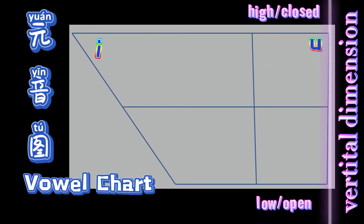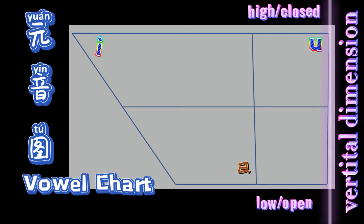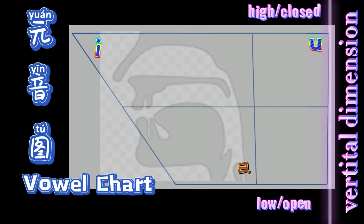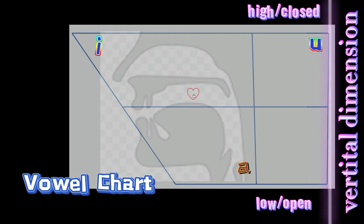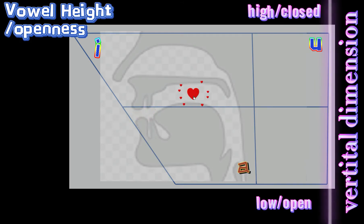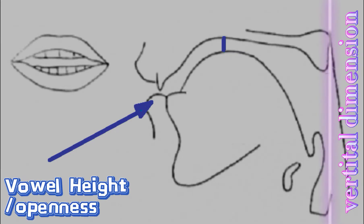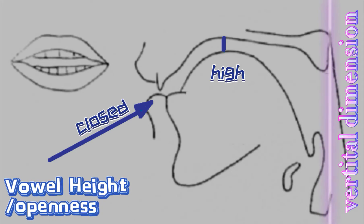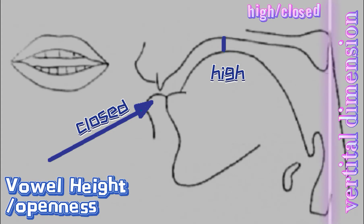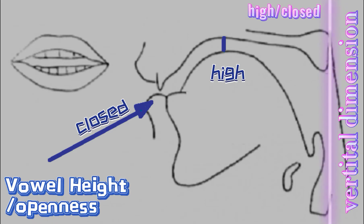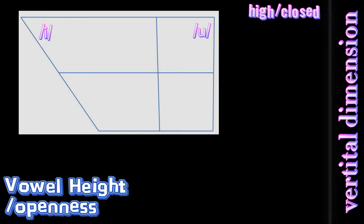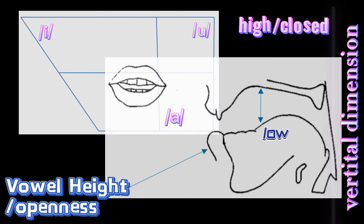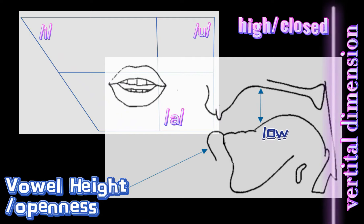The vertical dimension describes high, low, or close to open vowels. It's about the vertical position of the tongue relative to the roof of the mouth or the degree of mouth opening during the articulation. The phonetic term for this vertical dimension is vowel height or vowel openness. When the tongue is positioned very high in the mouth and the mouth is more closed during articulation, we are producing high vowels or closed vowels, such as 'yi' and 'wu'.